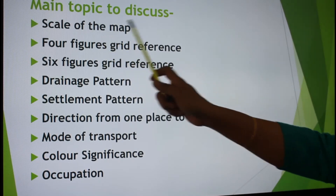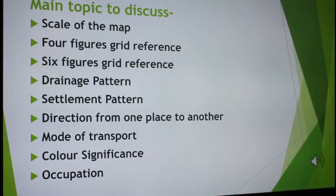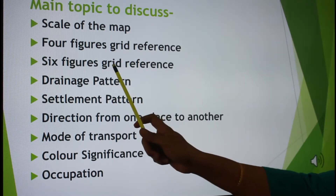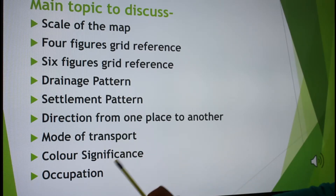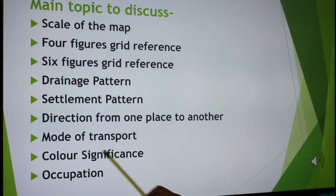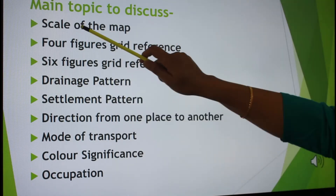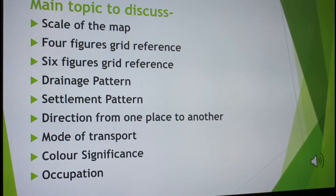In the topo sheet, we have different important topics which we are going to study in this class. Altogether there are 20 topics, and we are trying our best to cover five topics. The five main topics are: scale of the map, how to find the four grid reference, how to find the six grid reference, drainage pattern, settlement, direction from one place to another, mode of transport, color significance, and occupation. Here we are going to cover the first five: scale, four figure, six figure, drainage pattern, and settlement pattern.